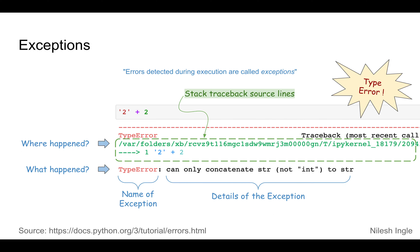Let's look at some of the terminologies we'll be using when we discuss errors and exceptions. In the example we just saw, the last line tells what happened — that's where the name of the exception is written in red color, followed by a colon, and after that we have the description or details of the exception. Above that, inside the green box, we see exactly what happened.